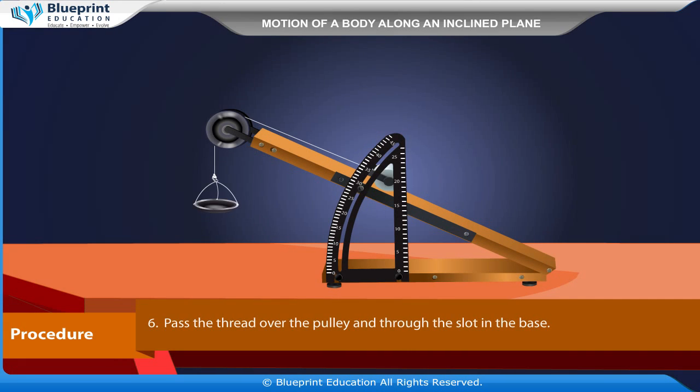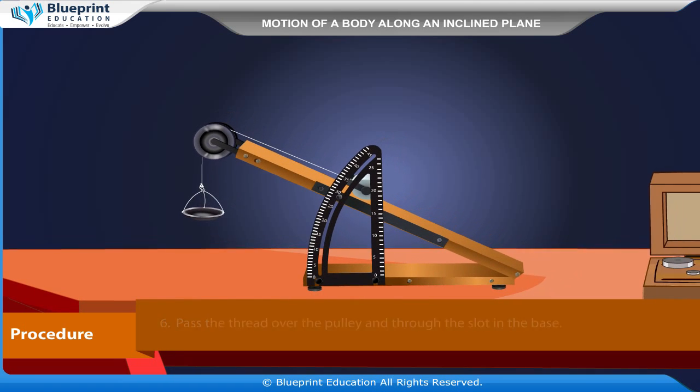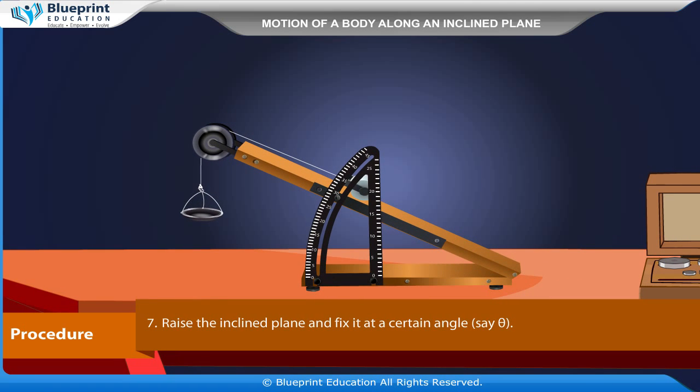Take a thread of suitable length and tie its one end with the roller and other end to the pan. Pass the thread over the pulley and through the slot in the base. Raise the inclined plane and fix it at a certain angle, say theta.